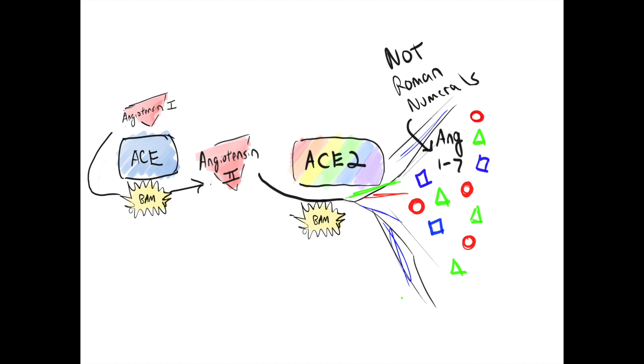Right. So it turns out ACE has a less famous cousin, ACE2. And ACE2 has a much more relaxed vibe. ACE2's purpose is to take up angiotensin 2 with the Roman numeral and make like six other molecules, the confusingly named angiotensins 1 through 7. Note that these do not have Roman numerals, and they are distinct from the original big players in the RAS cascade.